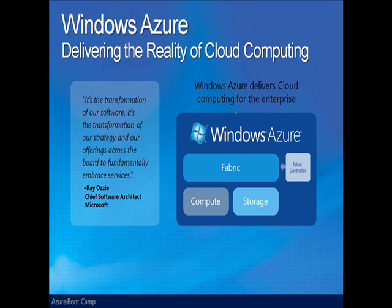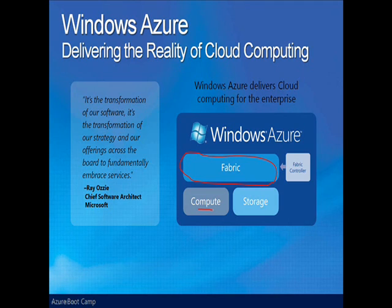Windows Azure is the hosting environment for your cloud-based services. A large group of machines, each potentially running a number of virtual machines and applications, with switches, a load balancer, and more running in Microsoft data centers — this makes up what is called the fabric. The fabric provides your virtualized computation and storage platform. Computation comes in the form of two different types of roles that you create: either web or worker roles. Storage of data is in the form of blobs, tables, and queues. The applications and data that reside in the fabric are monitored and controlled by the fabric controller.